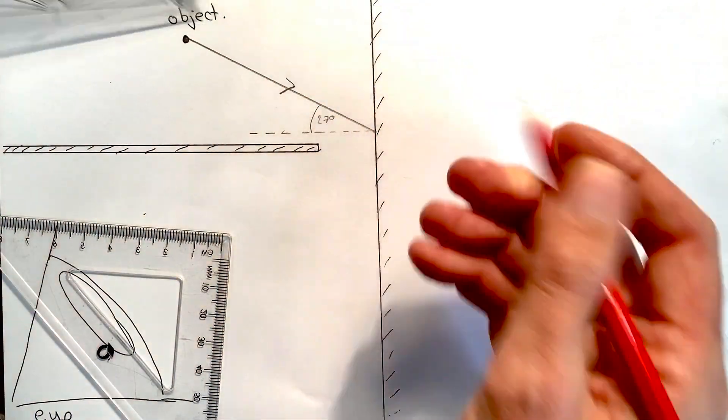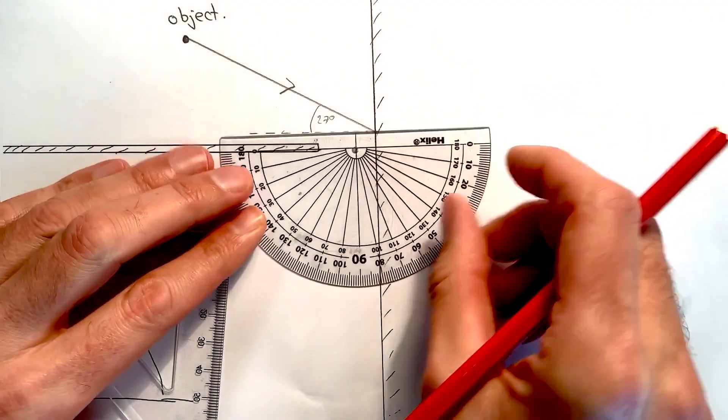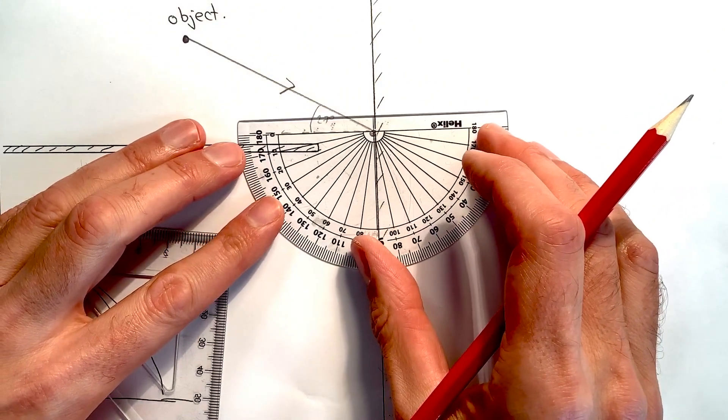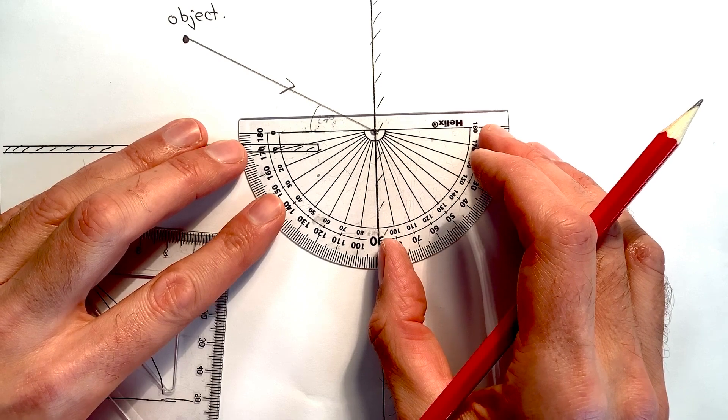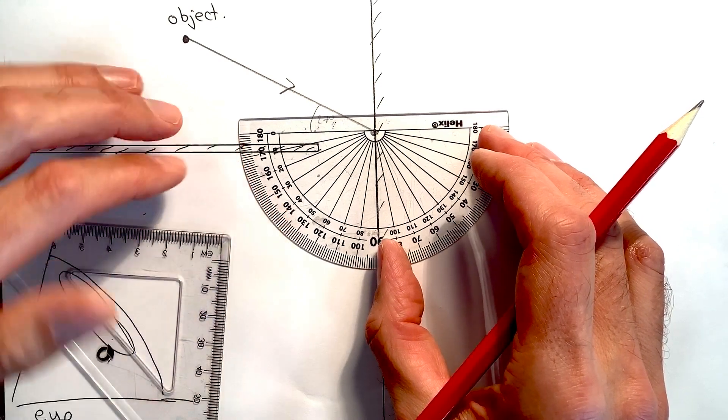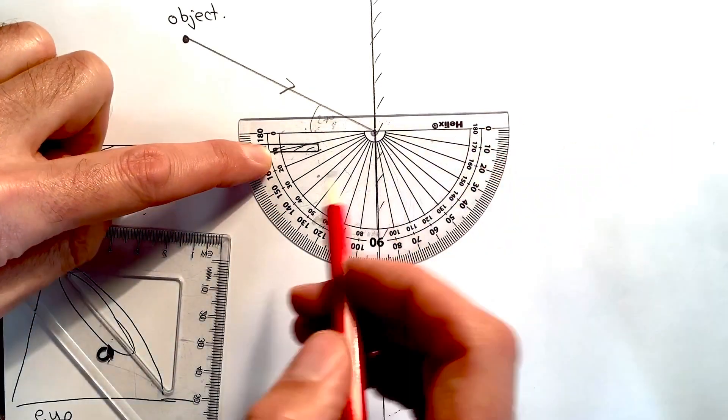So I don't forget, I'll write that there. And then I need to place my protractor the other way round and measure off that it is 27 degrees the other way.